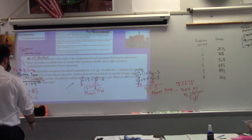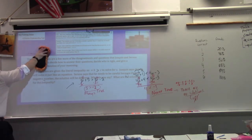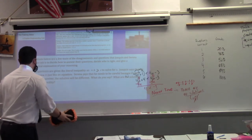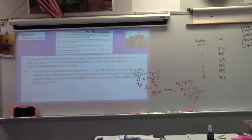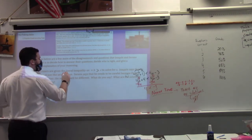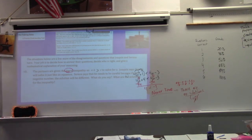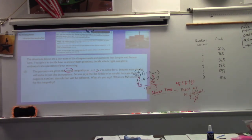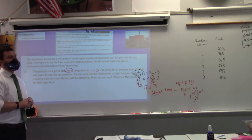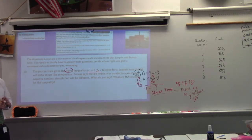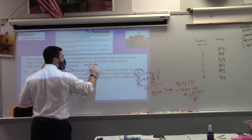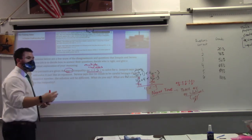Let's look at number 10 all together. The partners Serena and Joaquin are working on a literal inequality — AX plus B is greater than C. I want to use this to help review for our test tomorrow with literal equations. What makes this a literal inequality? Because it's in letters — meaning there are multiple variables. Anytime you're dealing with multiple variables, you're looking at a literal equation or literal inequality.